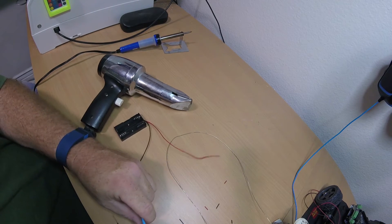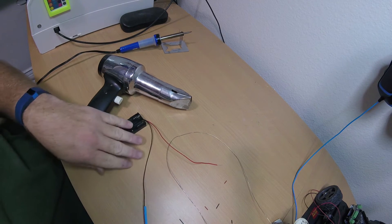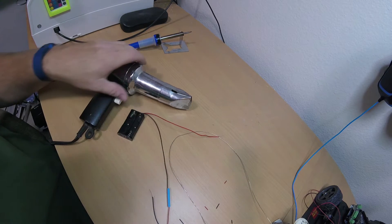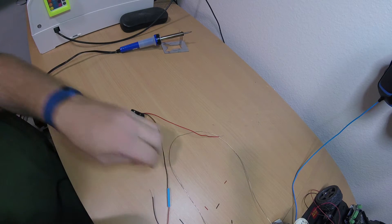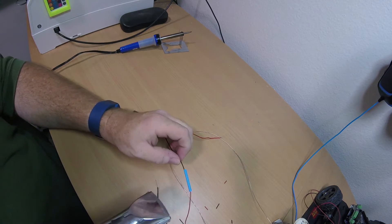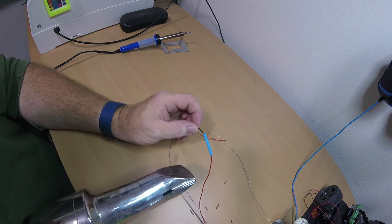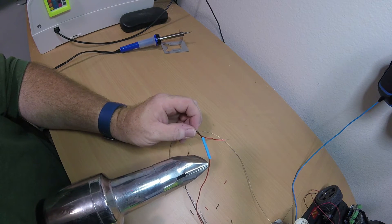Next, I pulled the heat shrink up and over the solder joint. Setting aside, I used a heat gun to go ahead and shrink that onto the wires. If you don't have a heat gun, you can use a lighter or, in many cases, just a hairdryer.